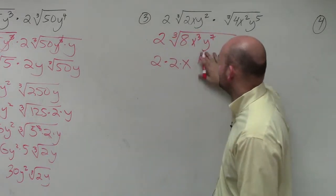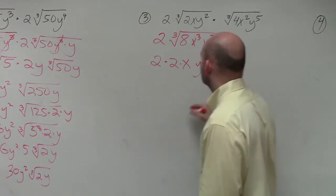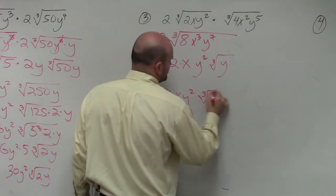So really, that's going to leave me left with y squared times the cube root of y. So my final answer is 4xy squared times the cube root of y.